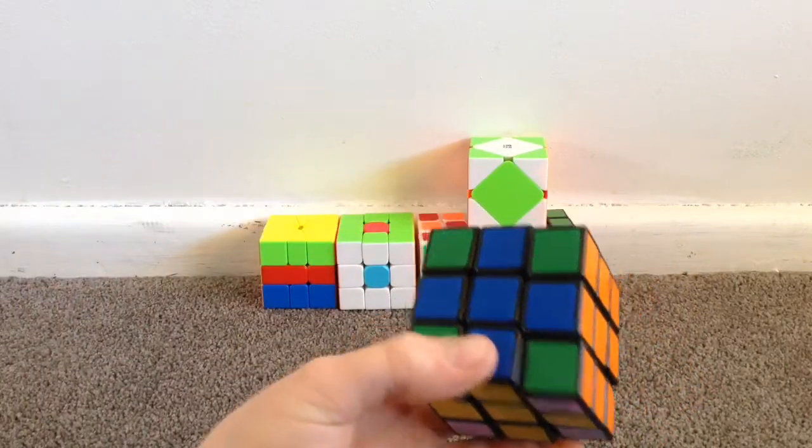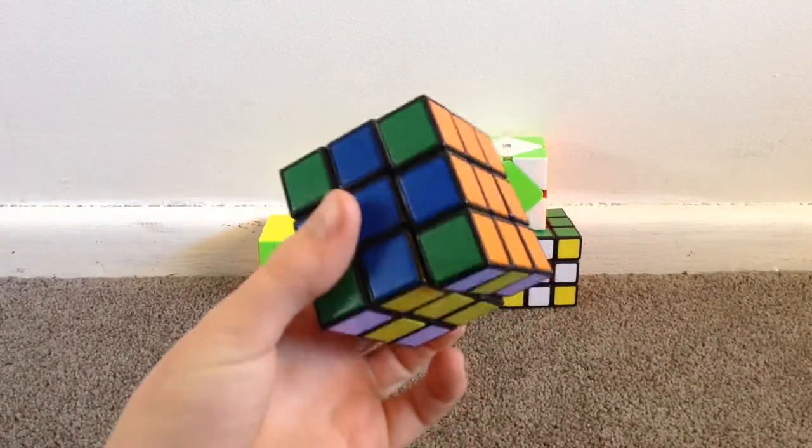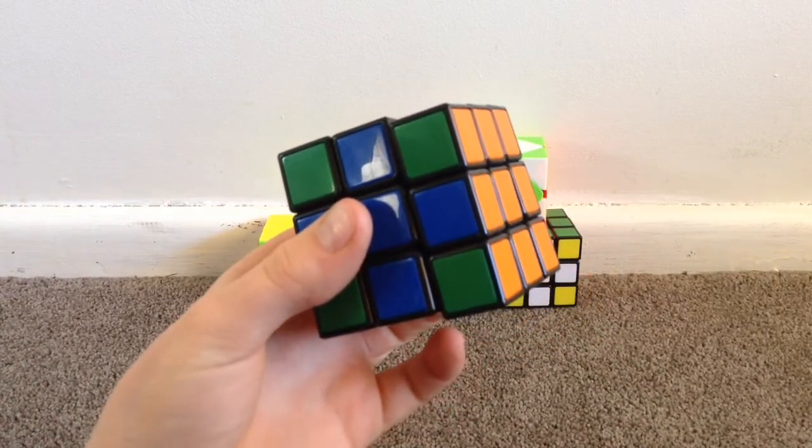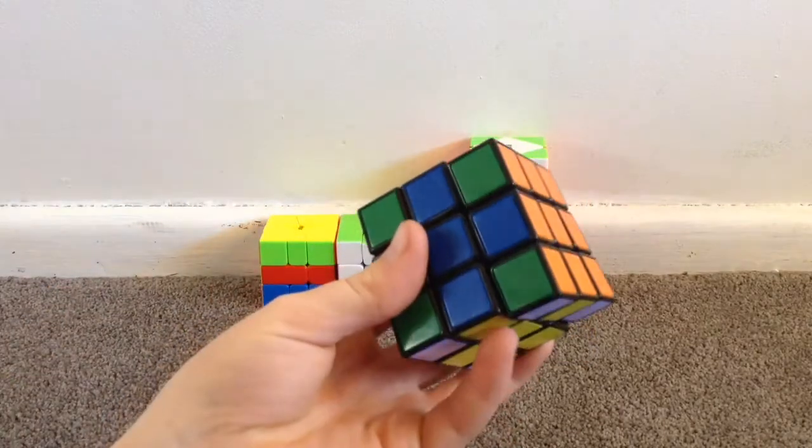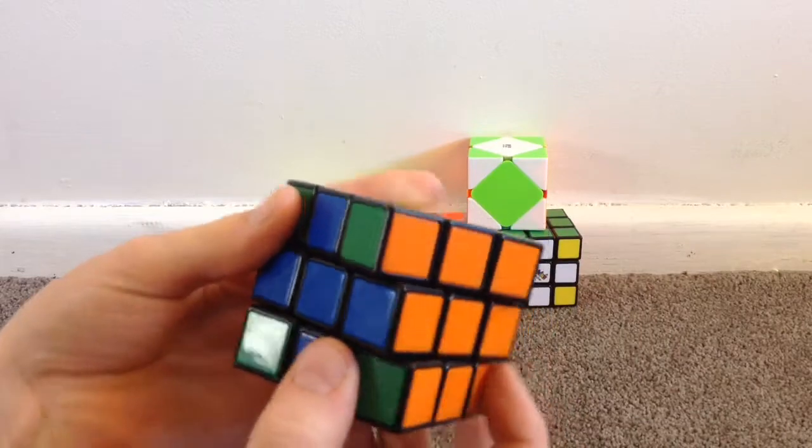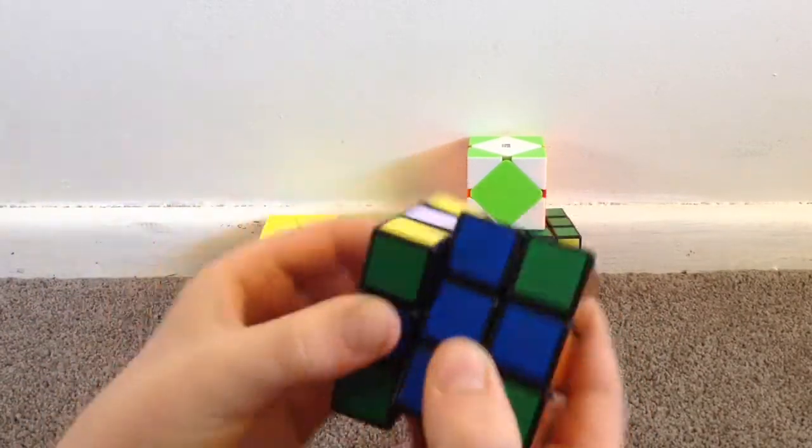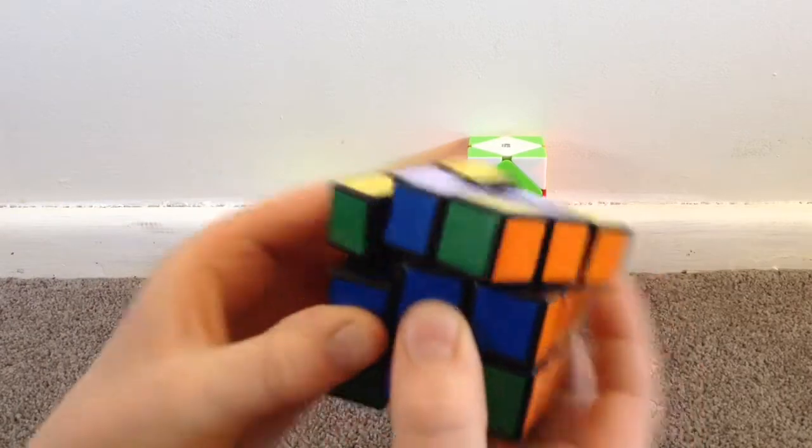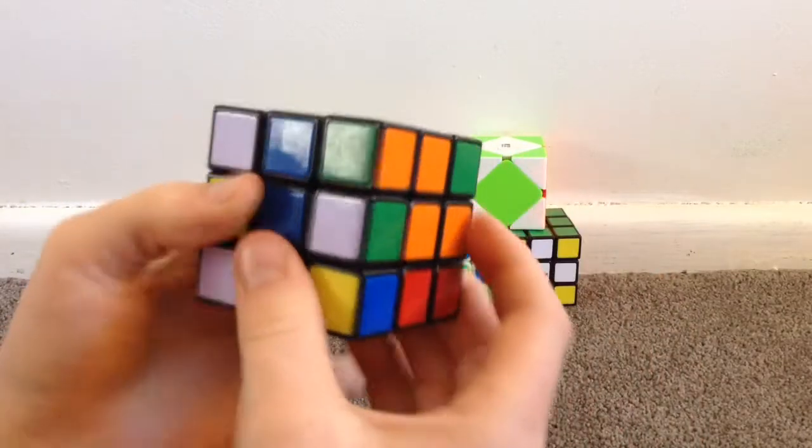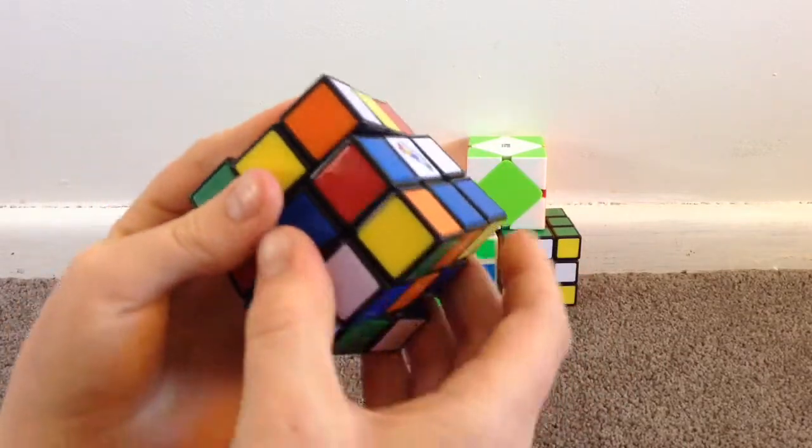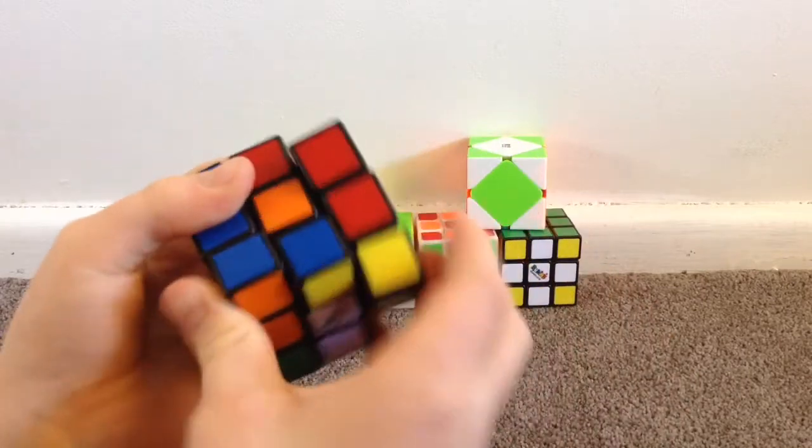Now we have the Rubik's brand 3x3. This cube is utterly, for what it's worth, terrible. It's a $20 cube and it has almost no corner cutting at all. And then it is just really bad. It's really tight. You can't tension it, so it's really not very good at all.